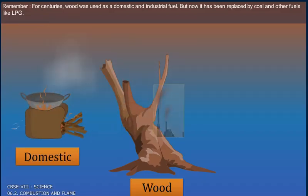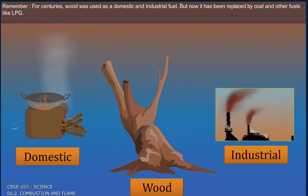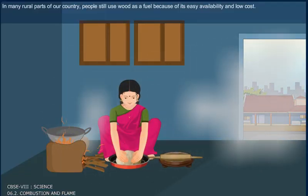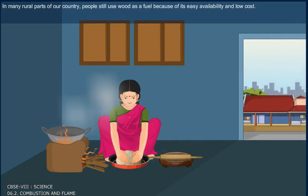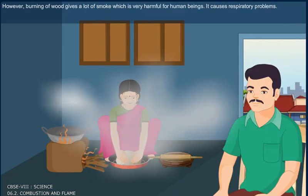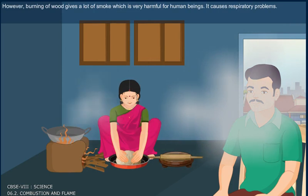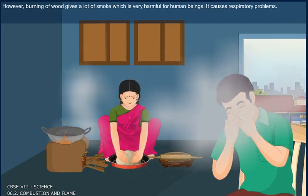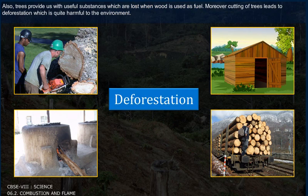For centuries, wood was used as domestic and industrial fuel, but now it has been replaced by coal and other fuels like LPG. In many rural parts of our country, people still use wood as a fuel because of its easy availability and low cost. However, burning of wood gives a lot of smoke, which is very harmful for human beings and causes respiratory problems. Also, trees provide us with useful substances which are lost when wood is used as fuel. Moreover, cutting of trees leads to deforestation, which is quite harmful to the environment.